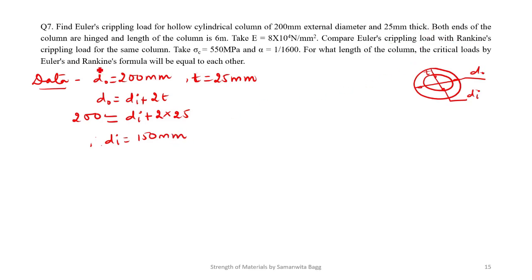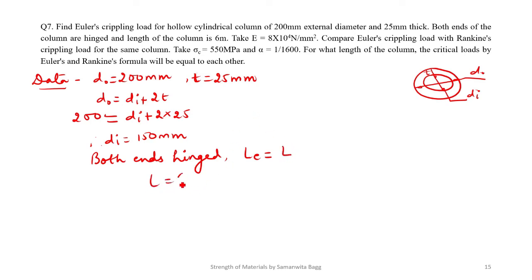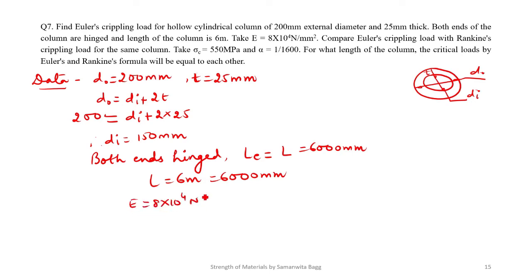Since both ends are hinged, LE = L = 6 meter = 6000 mm. The value of E is given as 8 into 10⁴ Newton per mm².